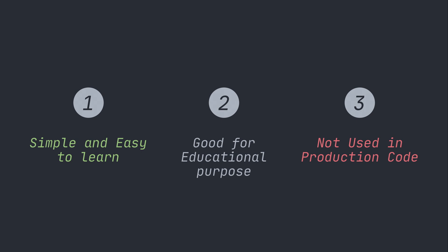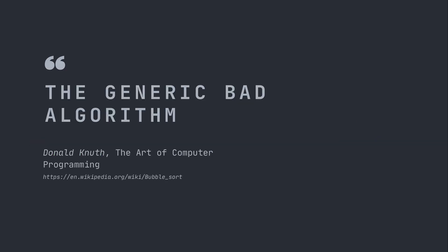However, its usage does kind of stop there. It's not used in production code at all because it is too inefficient. Even Donald Knuth, who wrote the Art of Computer Programming, says this is the generic bad algorithm. But I think it's worth learning anyway, so you can understand how it works and why it's bad and why not to use it, rather than just taking somebody else's word for it.